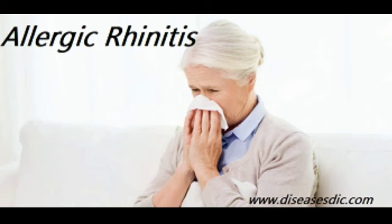There are two forms of allergic rhinitis. Seasonal: caused by an allergy to pollen and/or mould spores in the air. Pollen is the fine powder that comes from the stamens of flowering plants. It can be carried through the air and is easily inhaled. Symptoms are seasonal and usually occur in spring, late summer, and fall. Perennial: caused by other allergens such as dust mites, pet hair and dander, or mould. Symptoms occur year-round.